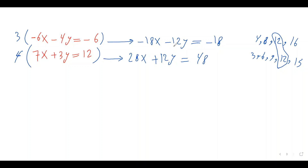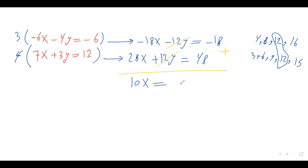Because the signs of the two y terms are different — one is positive, one is negative — I can add the two equations to eliminate y. Negative 18x plus 28x is 10x. Negative 12y and positive 12y cancel out. On the right side, negative 18 plus 48 is 30. So 10x equals 30. Dividing both sides by 10, x equals 3.